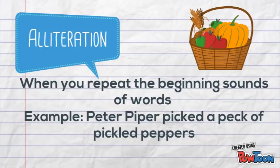Alliteration. Alliteration is when you repeat the beginning sounds of words, and then you can hear that when you read poems out loud. So for example, Peter Piper picked a peck of pickled peppers. That P sound is repeated, and that's an example of alliteration.